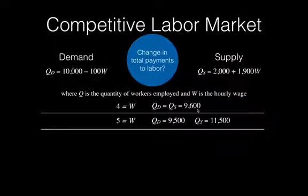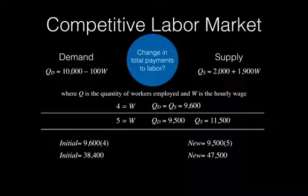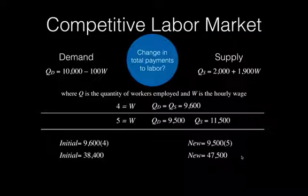Let's look at what happens to the change in total labor payments. We multiply the wage rate by the employment level. Initially, the wage rate was 4 and the employment level was 9,600, giving initial compensation of 38,400. With the minimum wage of $5 and new employment of 9,500, new compensation equals 47,500. The people who are still working are better off — payments to labor increased by 9,100. But don't assume everyone is better off, because 100 people got laid off and are no longer getting paid. Not all originally employed workers have benefited.